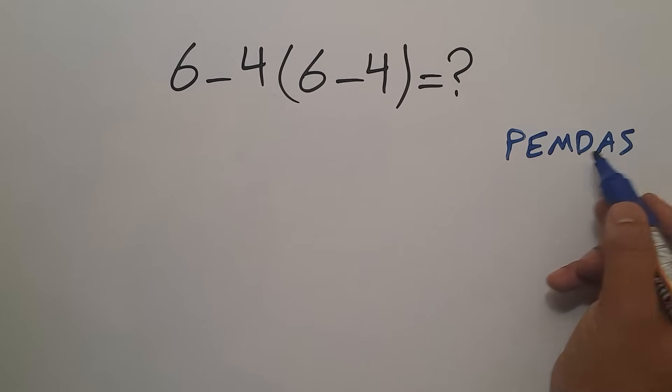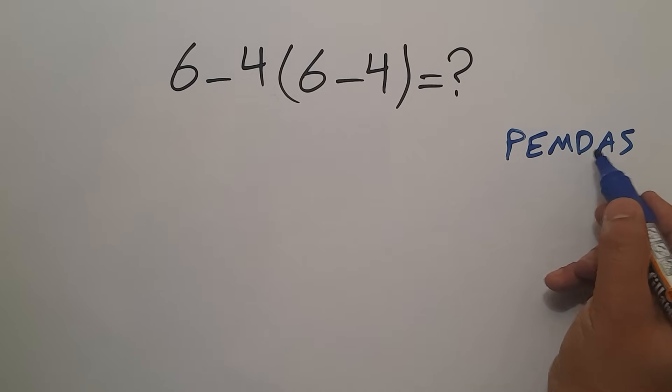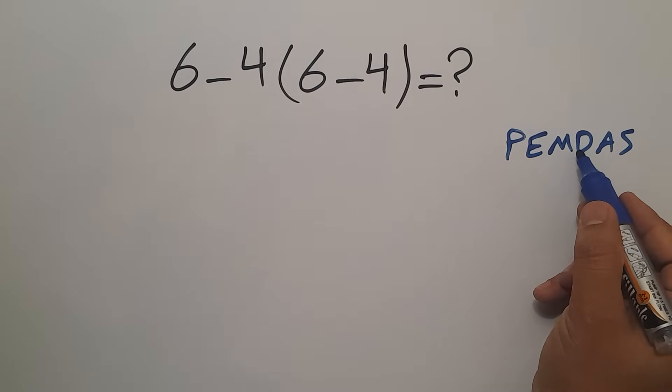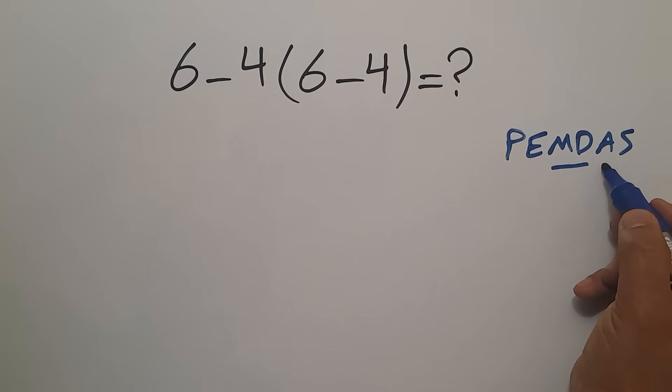We first do parentheses, then exponents, then multiplication and division, and finally addition and subtraction. Remember that multiplication and division have equal priority and we have to work from left to right, and the same applies to addition and subtraction.